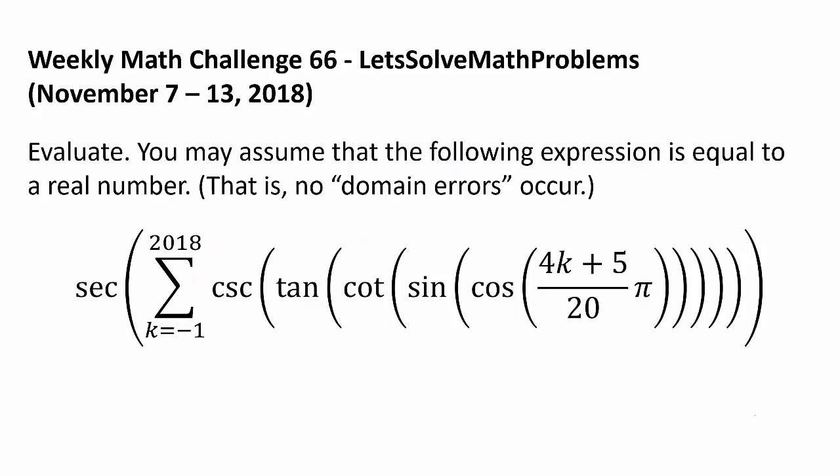Now let's get to this week's challenge. Evaluate. You may assume that the following expression is equal to a real number — that is, no domain errors occur in secant, cosecant, tangent, or cotangent. The expression is: secant of the summation from k equals negative 1 to 2018 of cosecant of tangent of cotangent of sine of cosine of (4k + 5) over 20 times pi.